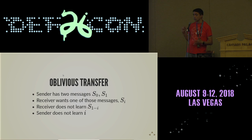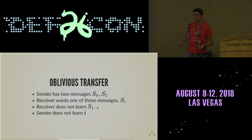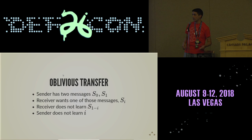You can imagine situations where you want to verify some information about a domain, but you don't want to tell everybody that you want to check that domain. Using oblivious transfer is at least one way you could keep the privacy of this inquiry while still satisfying security considerations of doing validation on the domain.